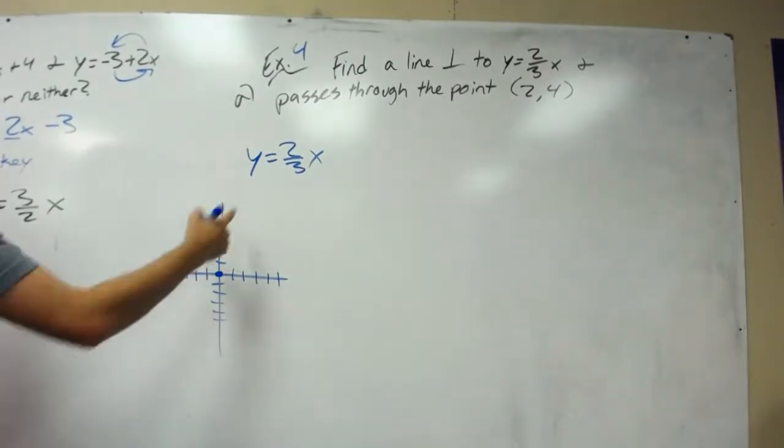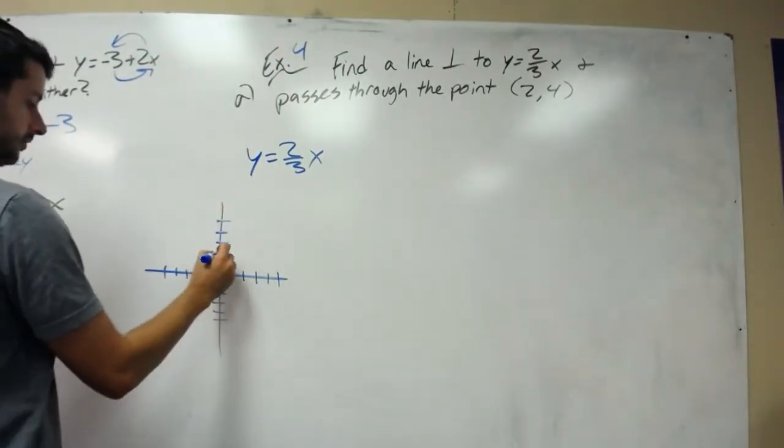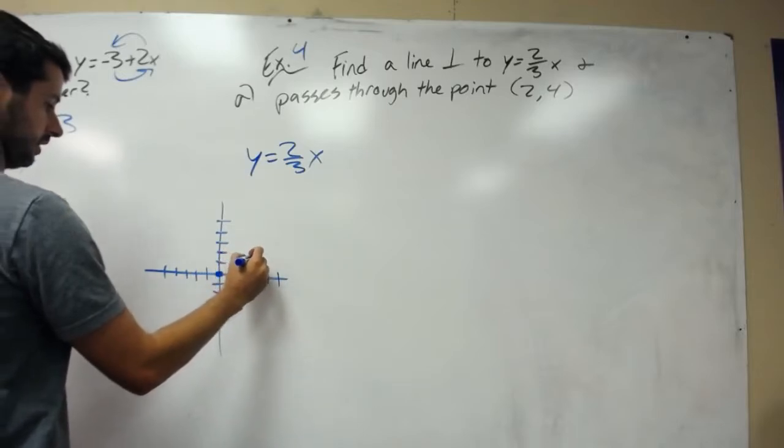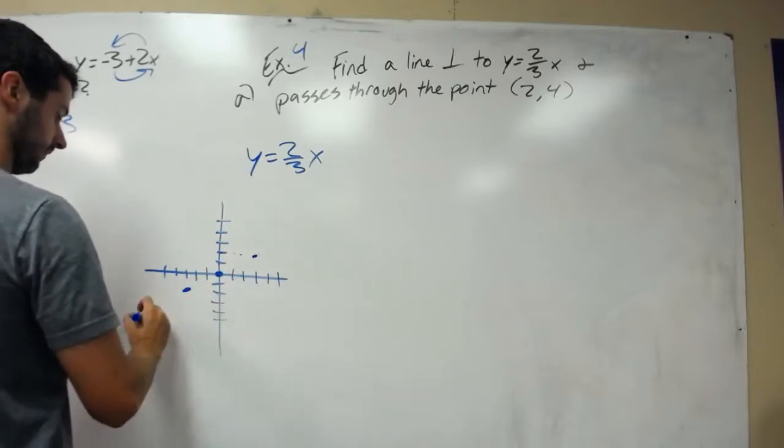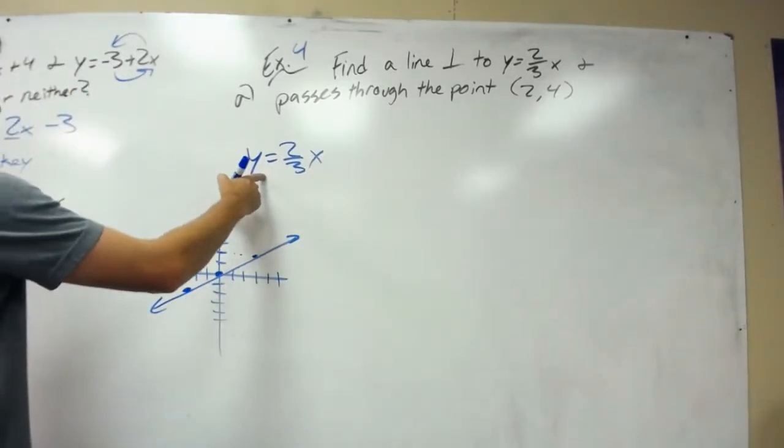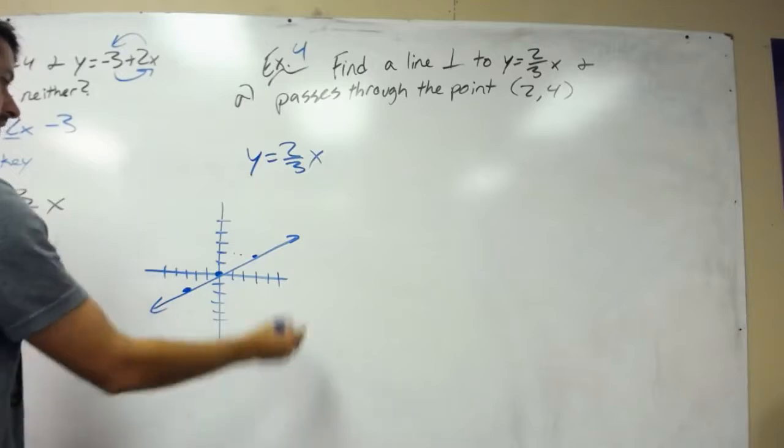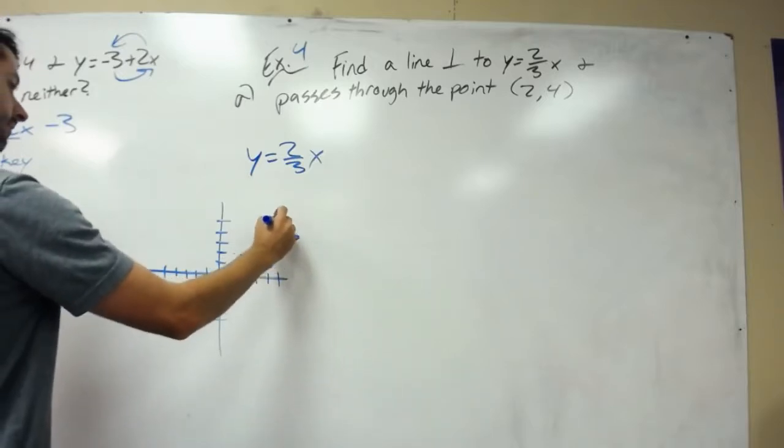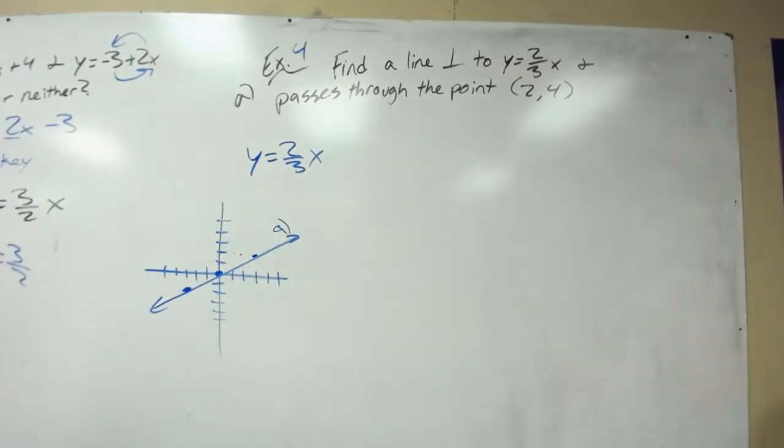Then we use our slope 2 over 3, and down 2 to the left 3. Draw our line. I just drew this line. This line is graphed. I'm going to call this line A.